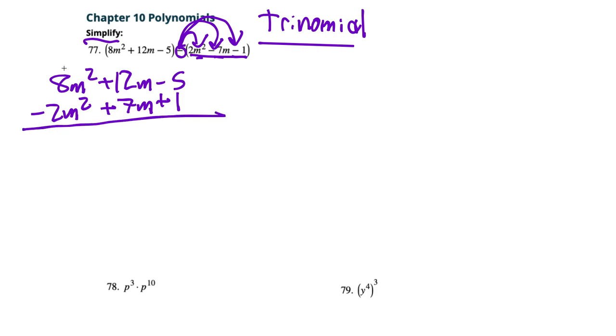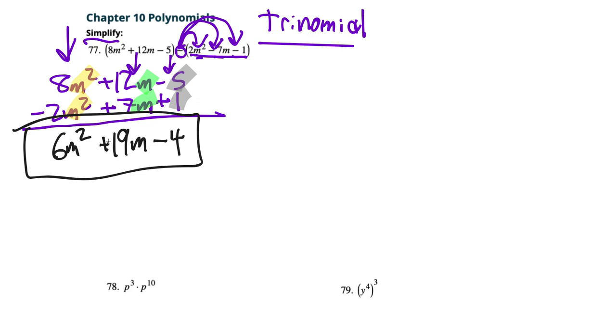Now notice I'm doing it vertically, it's just easier to keep the m squared terms in the first column, the m terms meaning m to the first degree in the second column, and then the numbers also known as constants in the third column. So 8m squared minus 2m squared, they're like terms because they both have an m squared, and the next they both have just an m, and then in the last column they're just numbers so they can play harmoniously with each other. So 8m squared minus 2m squared that's 6m squared, 12 plus 7 is 19m, and then negative 5 plus 1 is minus 4. So it's gonna be 6m squared plus 19m minus 4.